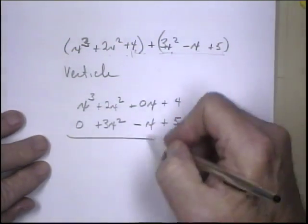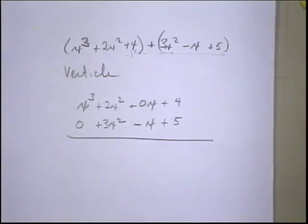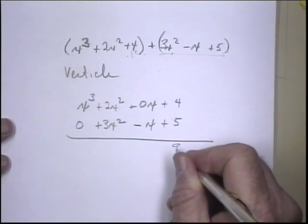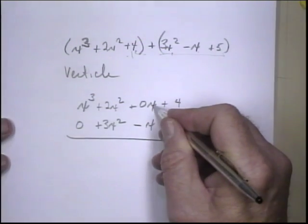So now we can just add the individual columns. They're like terms. We call them like terms. They have the same variable raised to the same power. So here is 4 and 5, that's 9. Here is 0 minus,